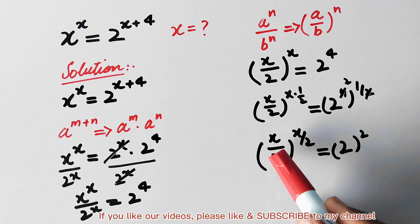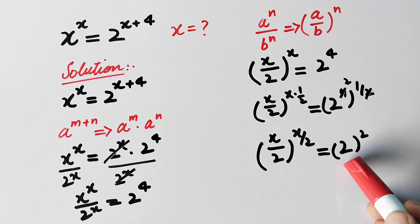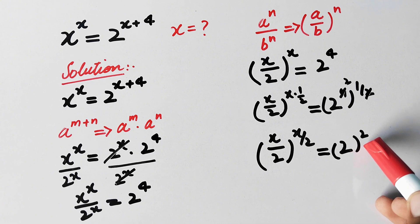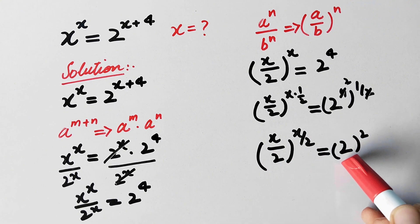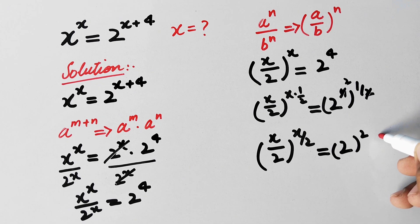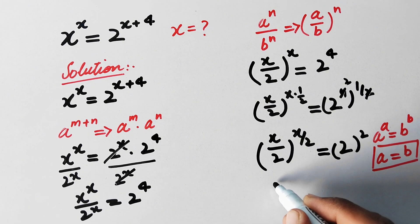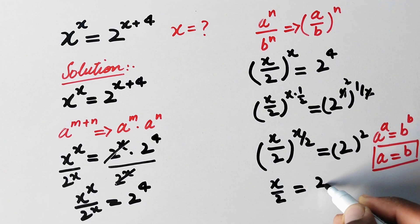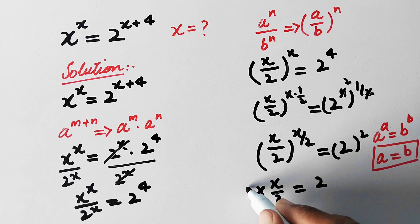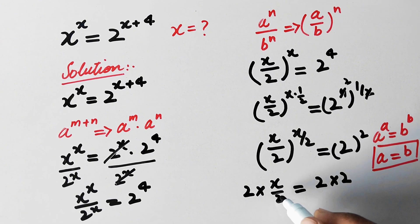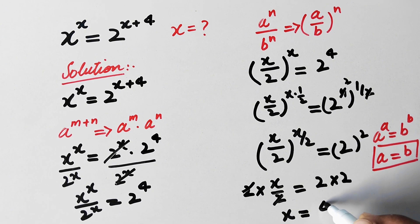Comparing both sides: the base on the left is x over 2, equal to the base 2 on the right, and the power on the left is x over 2, equal to the power 2 on the right. So we can apply the rule: if a power a equals b power b, then a equals b. Therefore x over 2 equals 2, and multiplying both sides by 2, we get x equals 4.